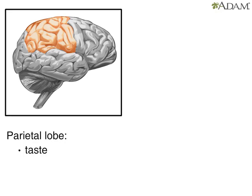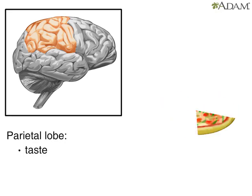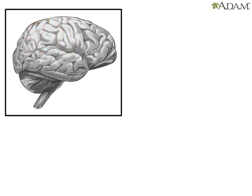There are two parietal lobes, one on each side of the brain. The parietal lobes are located behind the frontal lobe, towards the back of the head, and above the ears. The taste center is located in the parietal lobes.